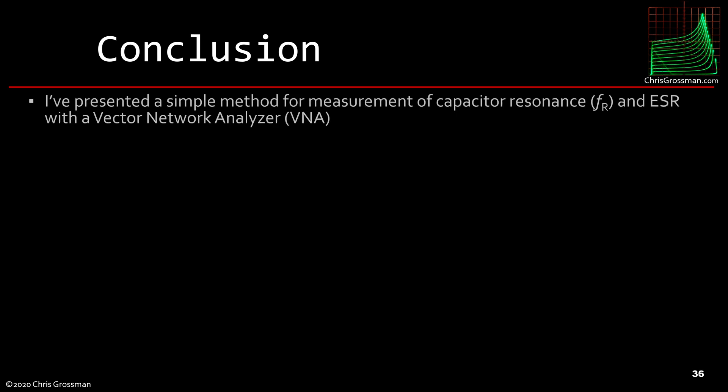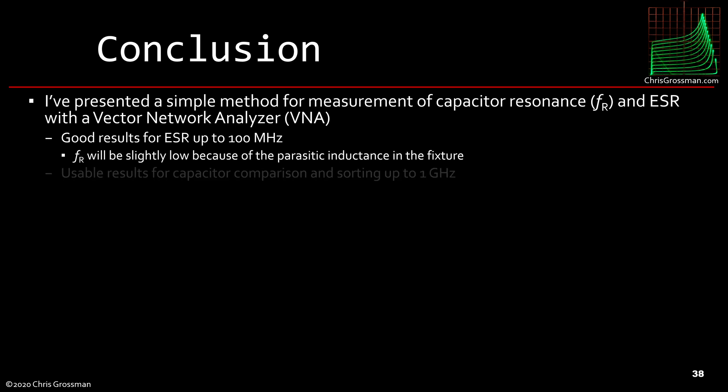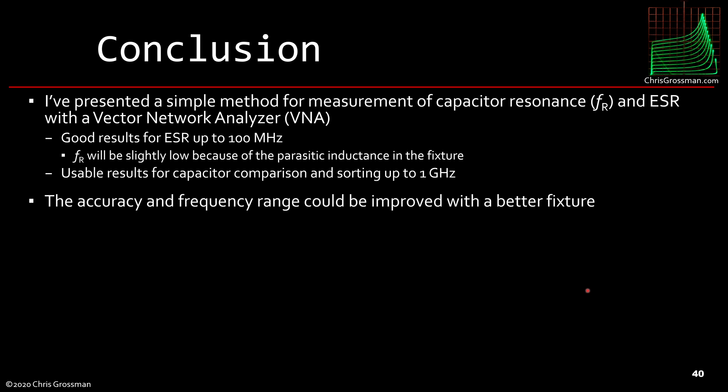Anyway, so here's the conclusion. I've presented a simple method for measurement of capacitor resonance and ESR with a vector network analyzer. You get good results up to 100 megahertz. The resonant frequency will be slightly low because of the parasitic inductance in the fixture. You'll get usable results up to a gigahertz. And I think they're good for capacitor comparison and sorting. The accuracy in the frequency range could be improved with a better fixture. It needs to be adapted to measure surface mount components as well.